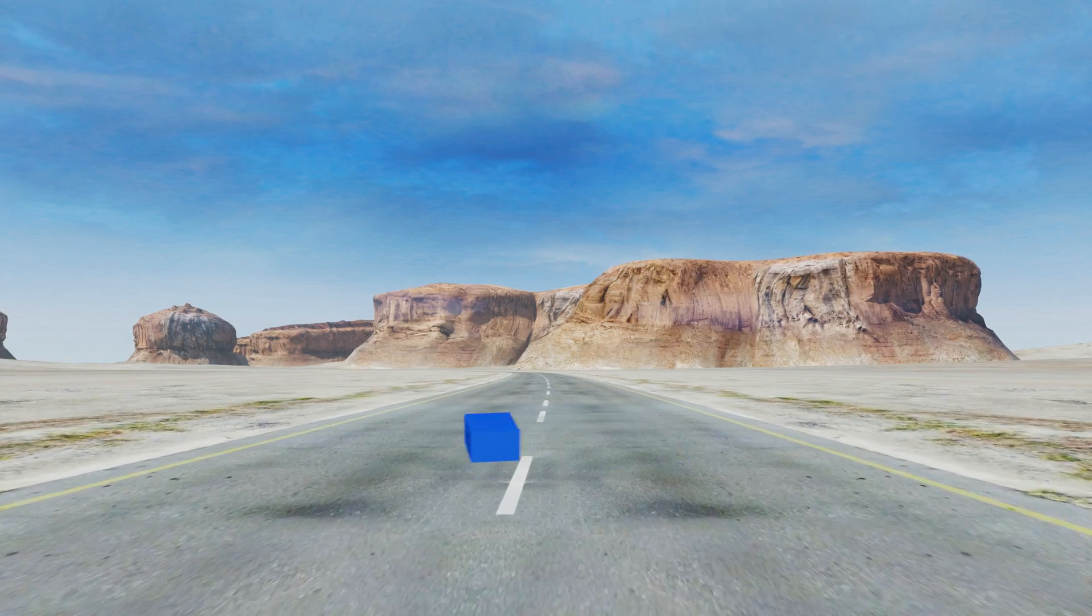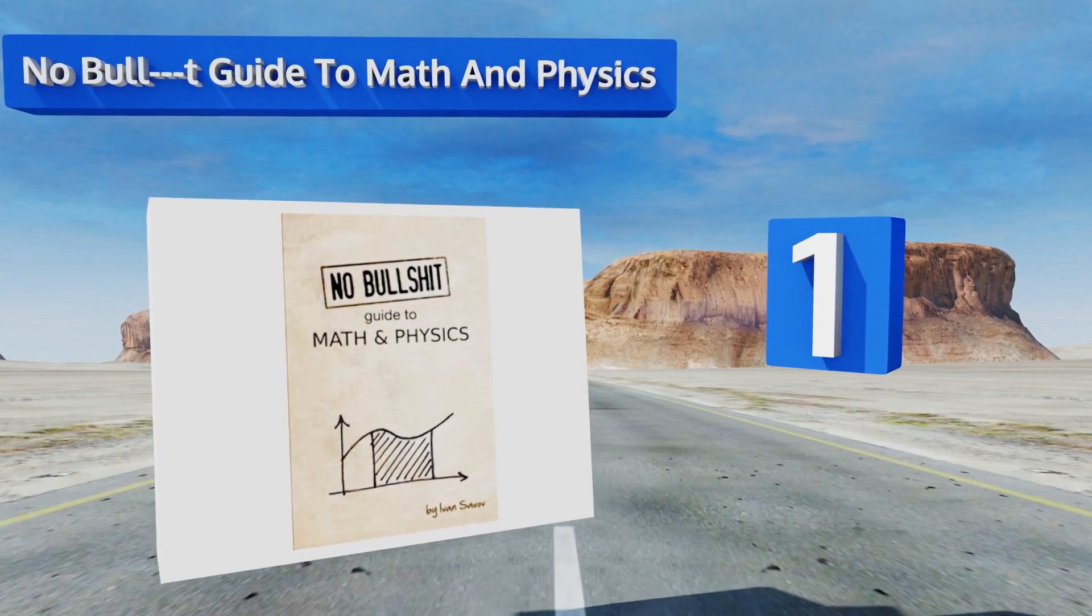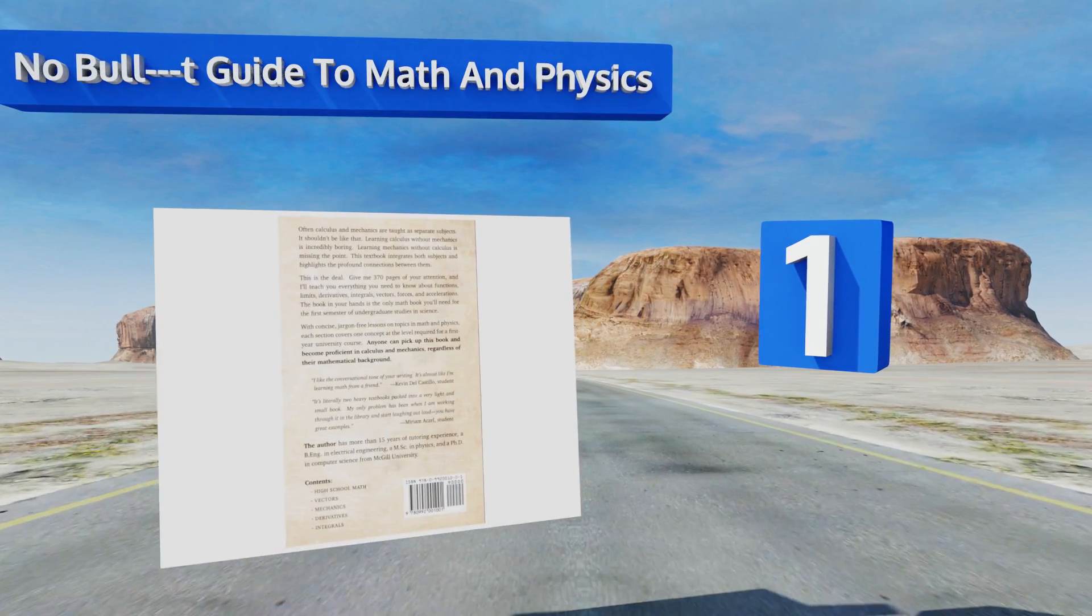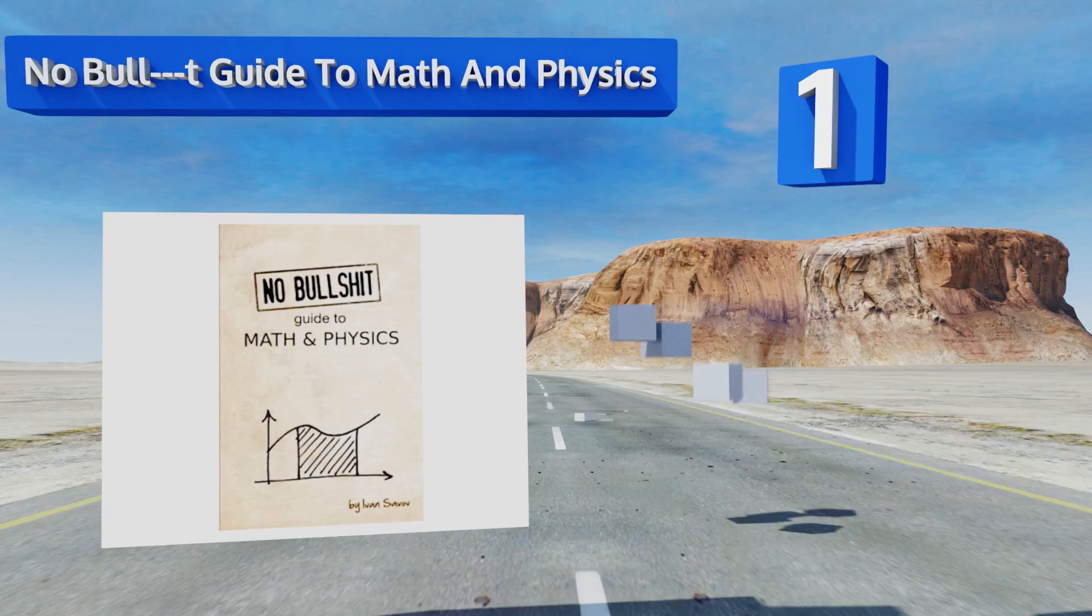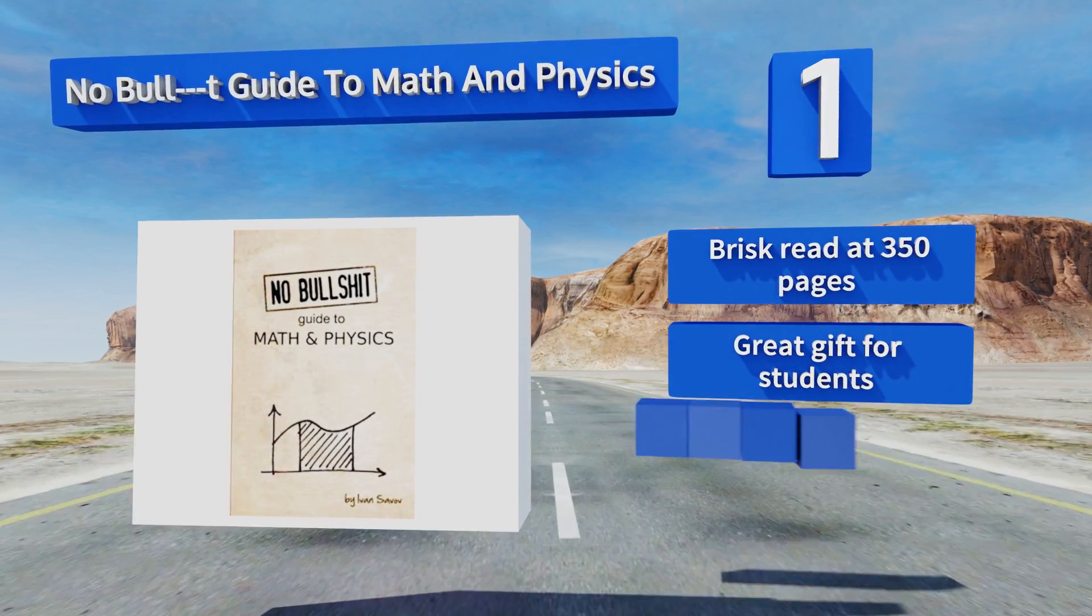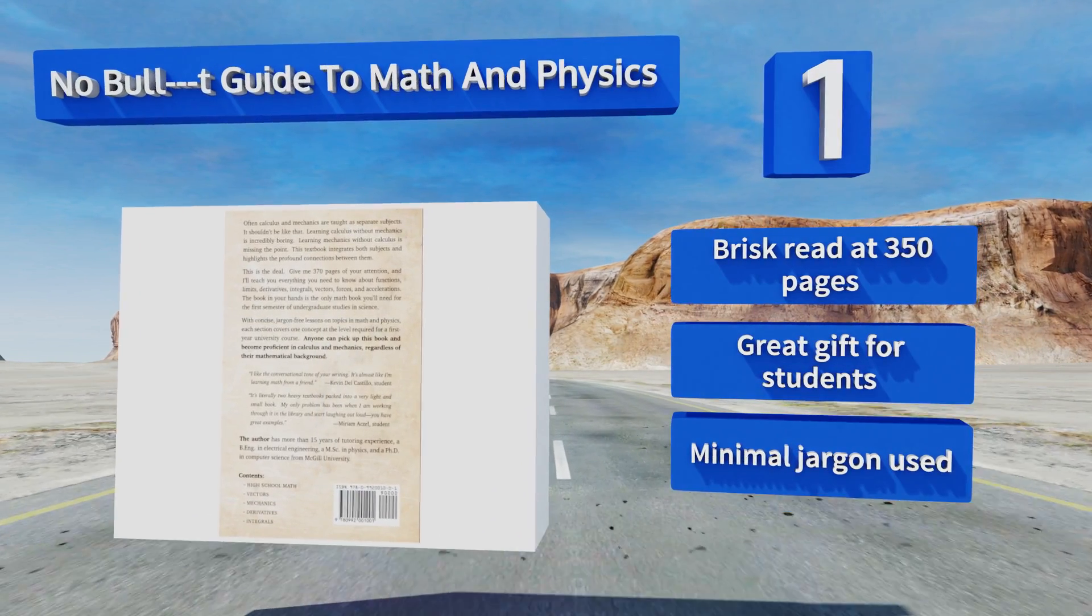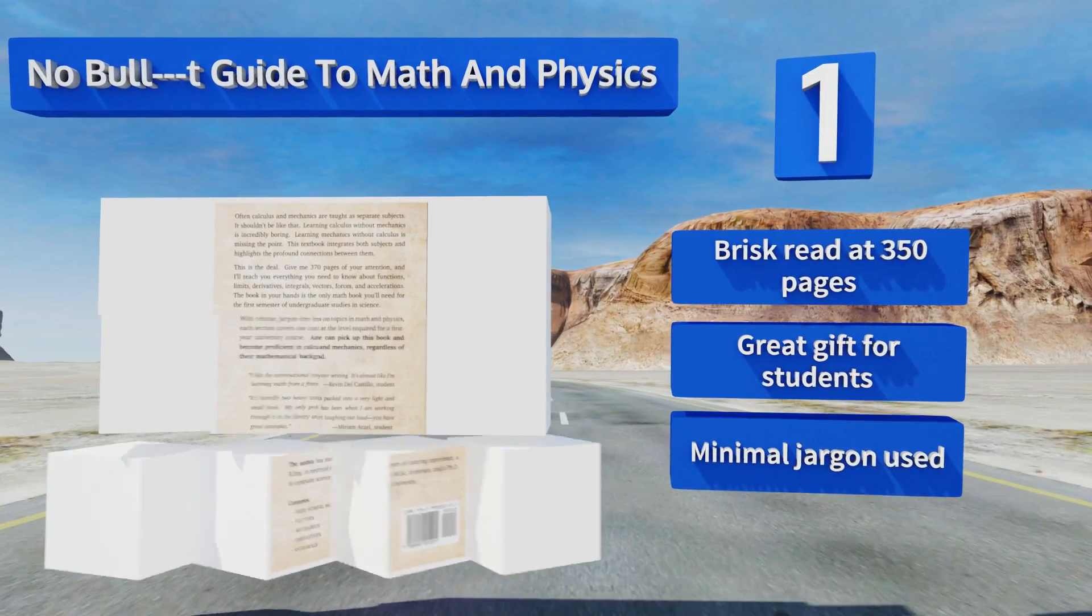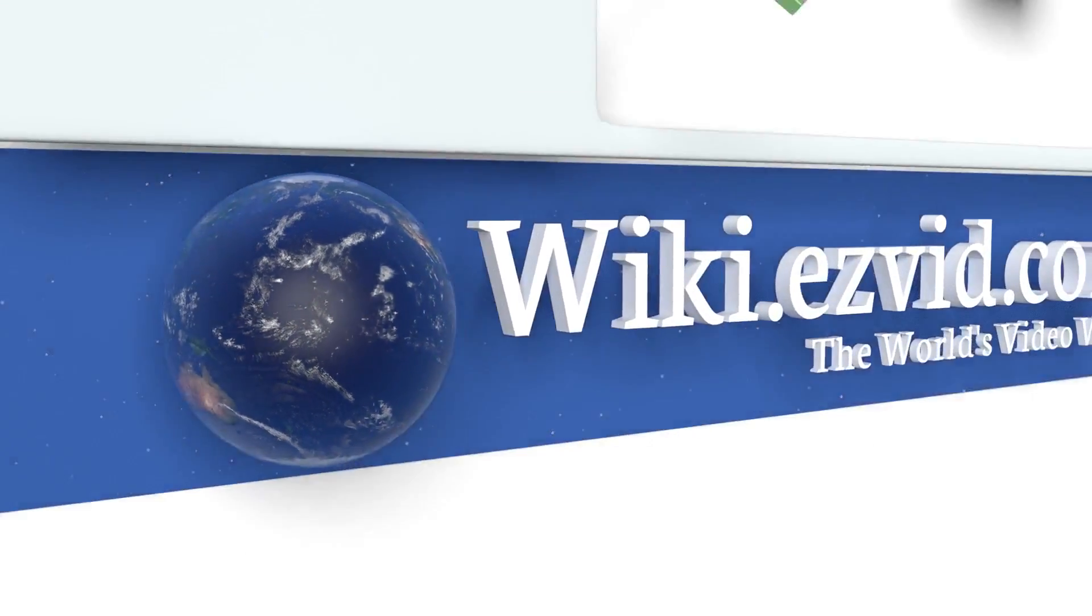And coming in at number one on our list, as the playful name would have you guess, The No Bull Guide to Math and Physics takes a light-hearted approach to a serious subject matter: the very manner in which matter and energy relate and function. It makes for great summer reading before the semester begins, it's a brisk read at 350 pages, and makes a great gift for students. It uses minimal jargon.